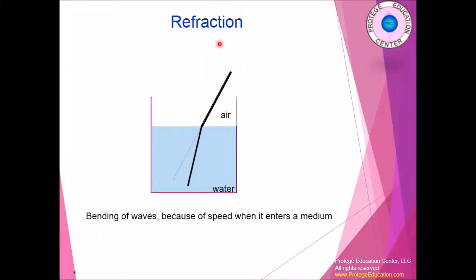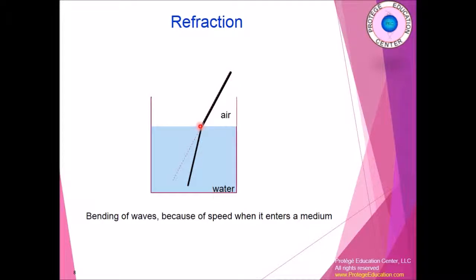The second way light can travel is called refraction, and this occurs mainly between two mediums. A medium is where the molecules are through which light travels, such as air or water. When light goes from air into water and hits the water's surface, there is a density difference between the mediums. This means the light cannot go straight through — the change in speed of the light wave causes it to change direction, and this is called refraction.